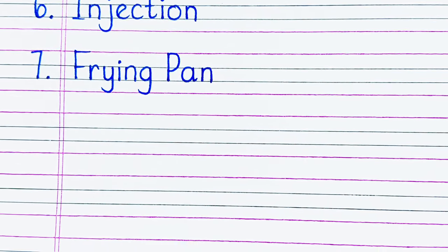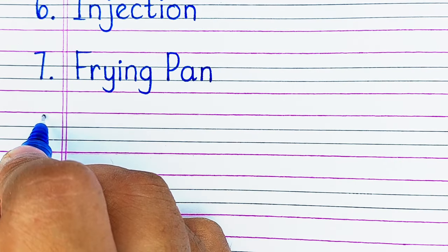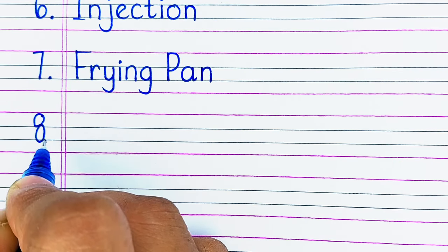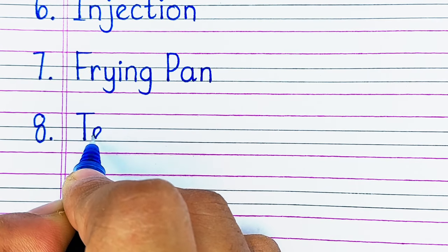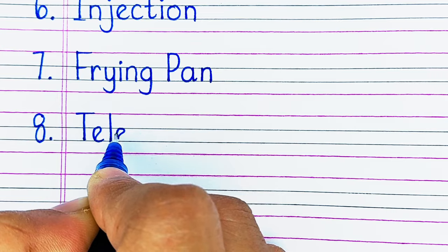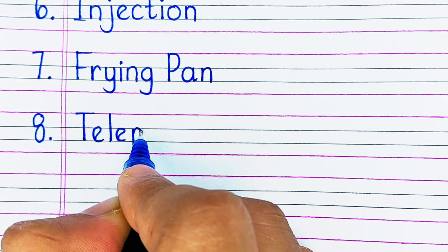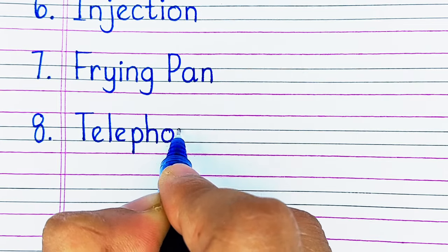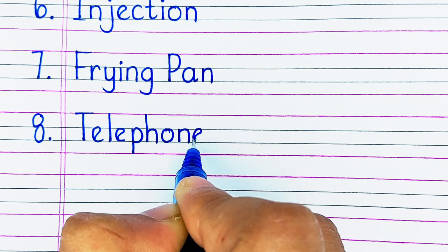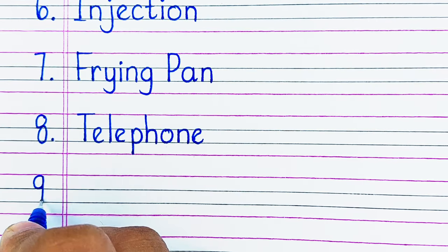On number 8, we have a device that we talk with people far away from us with this, i.e. telephone. Telephone is spelled as T-E-L-E-P-H-O-N-E.